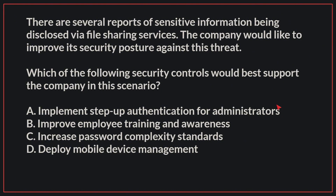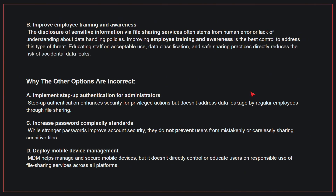The correct answer is B. Improve Employee Training and Awareness. The disclosure of sensitive information via file-sharing services often stems from human error or lack of understanding about data handling policies. Improving employee training and awareness is the best control to address this type of threat. Educating staff on acceptable use, data classification, and safe sharing practices directly reduces the risk of accidental data leaks.